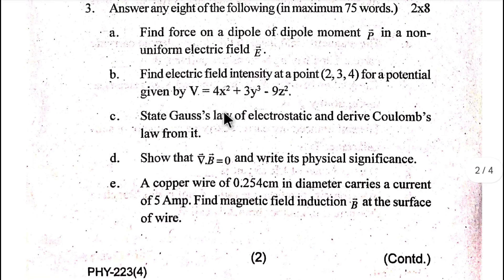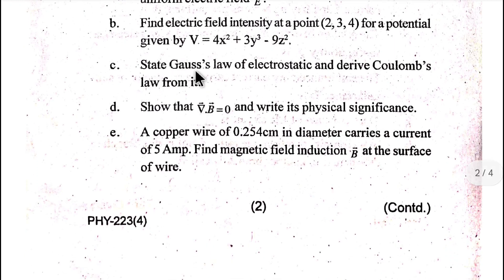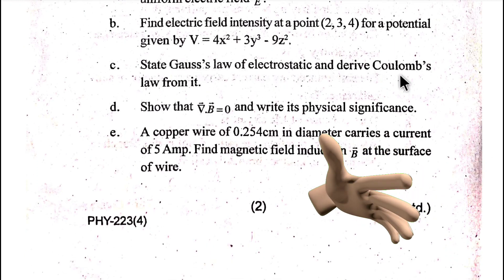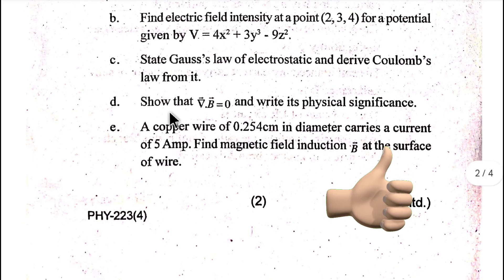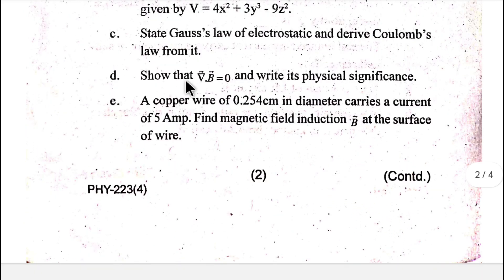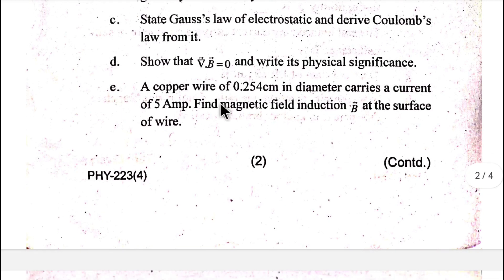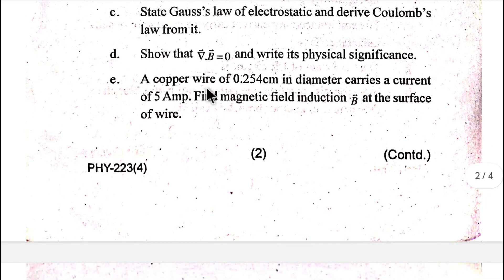State Gauss's law of electrostatics and derive Gauss's law from it. Show that del operator dot B vector equals zero and write its physical significance.